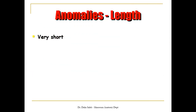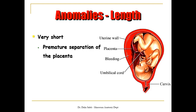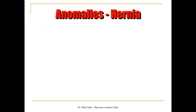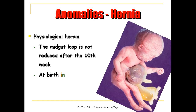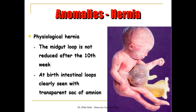A very short umbilical cord, due to the baby's movements inside the uterus, may lead to premature separation or avulsion of the placenta from the uterine wall. Another anomaly involves herniation of the intestine into the umbilical cord: the baby may be born with a physiological hernia if the mid-gut loop is not reduced back after the tenth week of development. At birth, intestinal loops are clearly visible through the transparent amniotic sac protruding from the abdominal cavity.